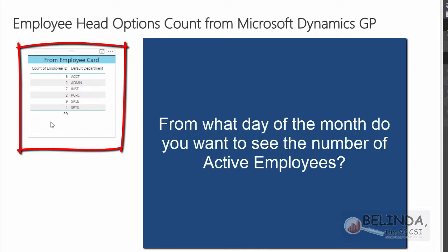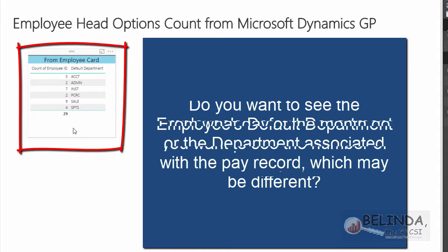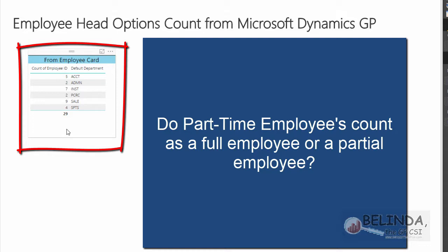A key question is: when do I want to count my employees? Do I want to know on the last day of the month, the middle of the month, or how many were active for the whole month? If someone was inactivated yesterday and I refresh, that employee was active during the month but won't appear — I'll only see who's active right now. Also, if someone is split between departments, I'll only see their default department, and part-time employees appear as whole employees.